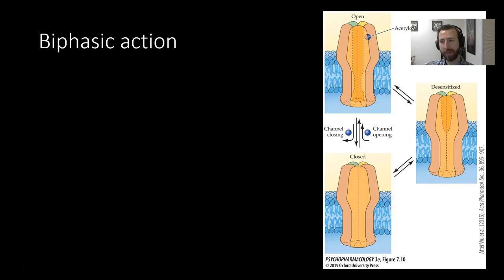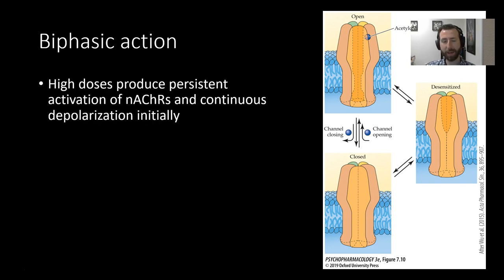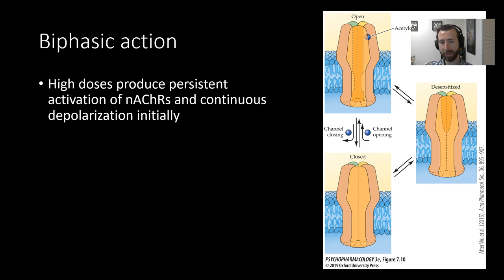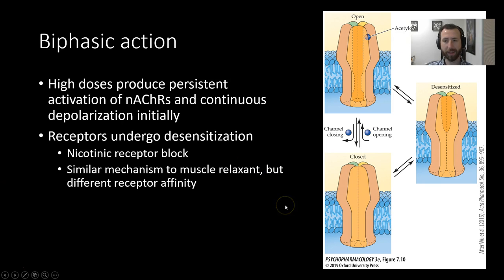The last thing we're going to talk about in this part is the biphasic action of acetylcholine receptors, specifically those that are activated by nicotine. Initially, when nicotine floods the synapse, it produces persistent activation of these nicotinic acetylcholine receptors. This causes a lot of depolarization events as sodium flows in — excitation of these neurons. But with repeated stimulation, these receptors can undergo desensitization.